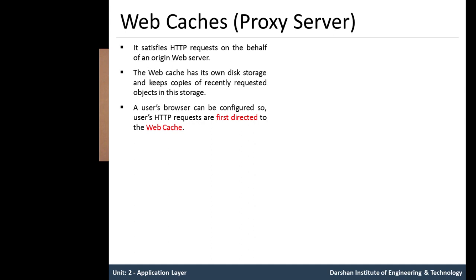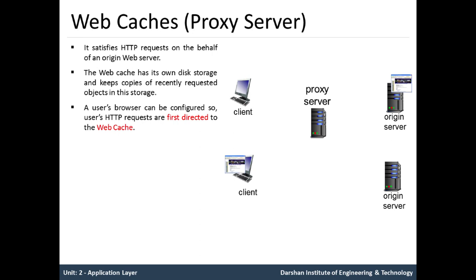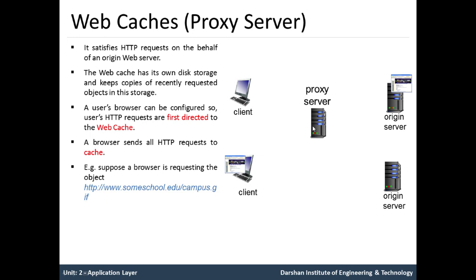A user's browser can be configured so the user's HTTP requests are first directed to the Web Cache instead of the origin web server. The client or user sends a request to the proxy server instead of the origin server, and the proxy server works as an origin server. All browsers send HTTP requests to the cache proxy server, and that proxy server replies with the object to the client.